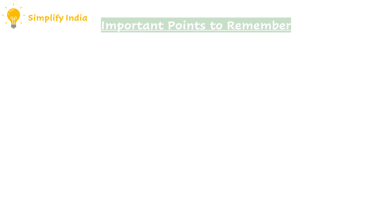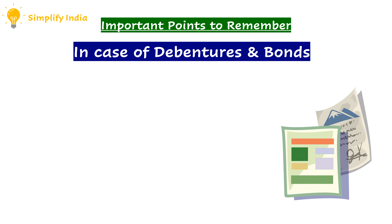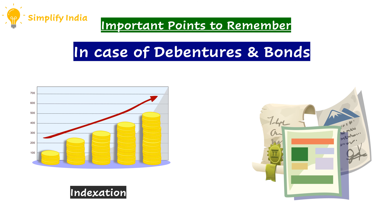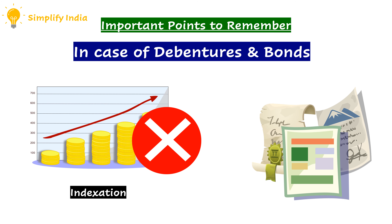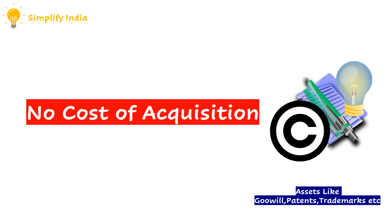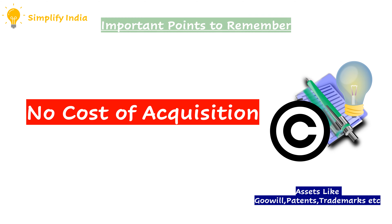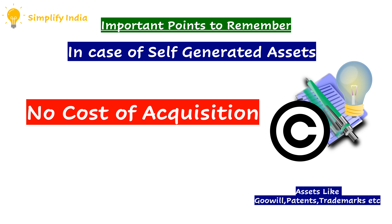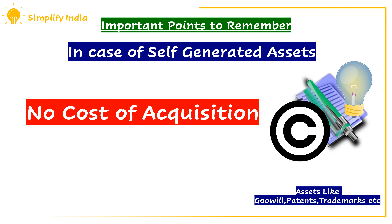In case of debentures and bonds, indexation is not required as they are not affected by inflationary changes. In case of self-generated assets like goodwill, patent, trademark, etc., there will be no cost of acquisition.